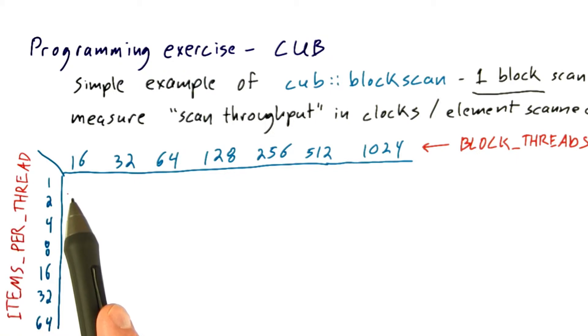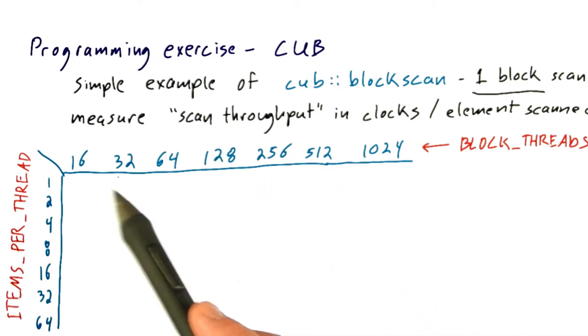Go ahead and experiment with different values of block_threads and items_per_thread to figure out how these two parameters affect the scan throughput.